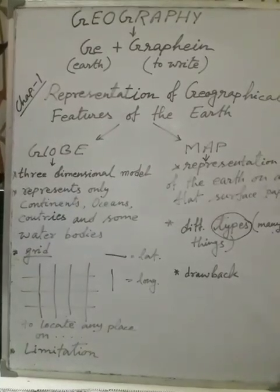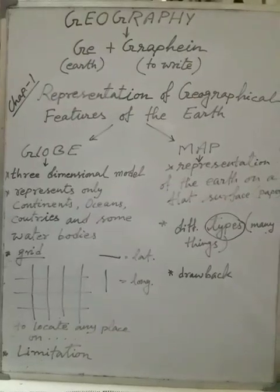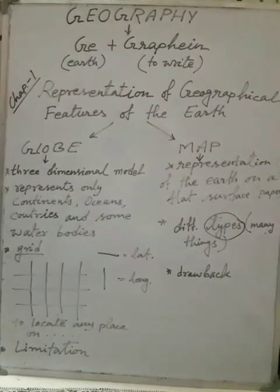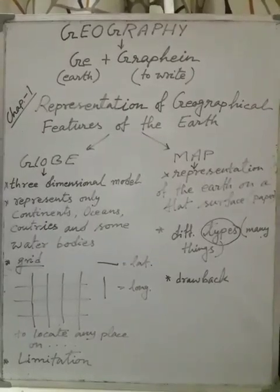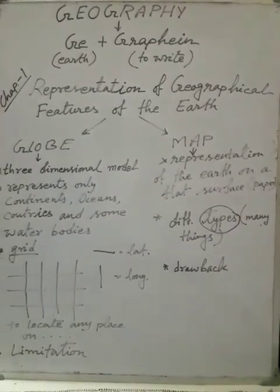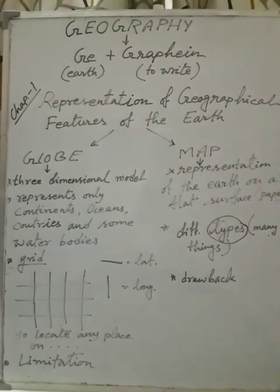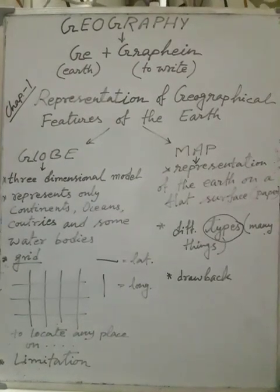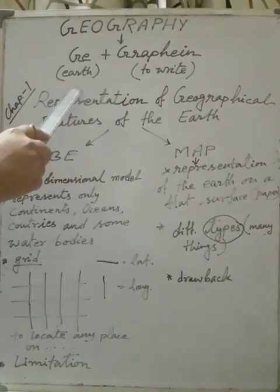Students, today I am going to teach you a new subject — geography. This subject is not completely new for you because last year, when you were in standard four, you had SST (Social Studies), and from that subject you got some ideas about geography. From this year, it continues as a separate subject. Before starting Chapter 1, we should know the meaning of the word geography. Geography comprises mainly two Greek words: 'Ge' and 'graphe'. 'Ge' means Earth, and 'graphe' means to write or describe.